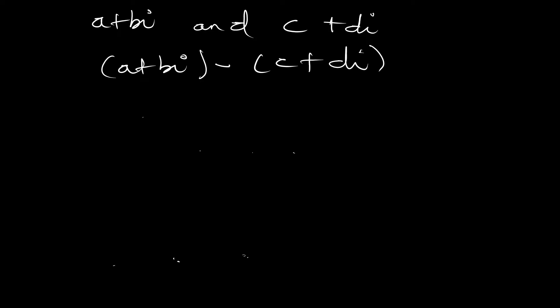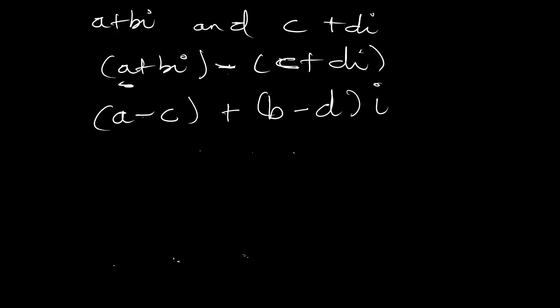The negative sign affects everything in the second complex number, so we get (a-c) for the real part, and (b-d) for the imaginary part, giving us (a-c) + (b-d)i. This is how we subtract complex numbers. Let's look at some examples.